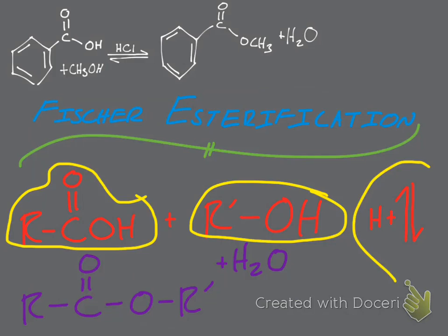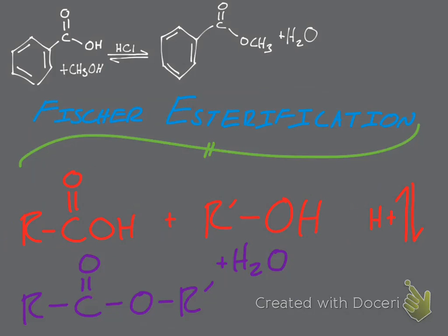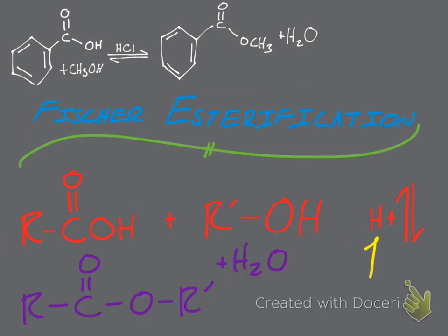Let's go through the mechanism for the sample reaction. We have benzoic acid and CH₃OH (methanol), and we will get our H⁺ from HCl. Notice this is an equilibrium reaction — that's just important to note for future reference, though it won't matter much as we go through the mechanism here.